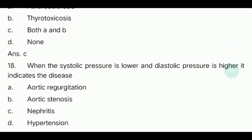Eighteenth question: When the systolic pressure is lower and the diastolic pressure is higher, it indicates the disease. If systolic pressure is low and diastolic pressure is higher, the options are aortic regurgitation, aortic stenosis, nephritis, or hypertension. The answer is aortic regurgitation.